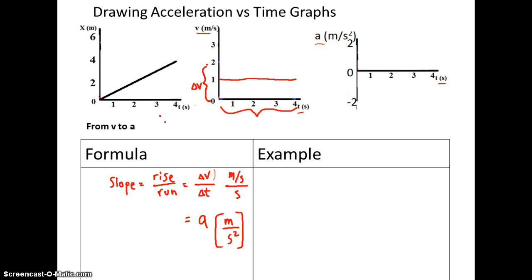To get from one graph to the other graph going right, I take the slope. To get from this graph to this graph, I take the slope again. So let's see with an example, and maybe it'll make more sense.